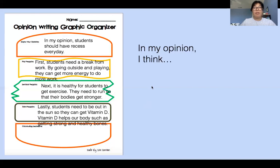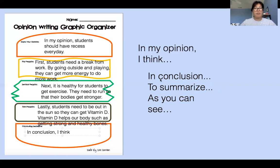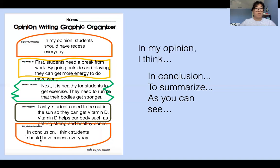Now I'm going to write my concluding sentence. Remember, for the concluding sentence you need to write a transition word. I'm going to write 'in conclusion' — or you can say 'to summarize' or 'as you can see.' I'm going to use 'in conclusion,' comma. I think — so I'm not using 'in my opinion,' I'm using 'I think' — I think students should have recess every day. So my concluding sentence is the same as what I wrote in the top bun, my opinion, when I state my opinion — I'm just restating it.